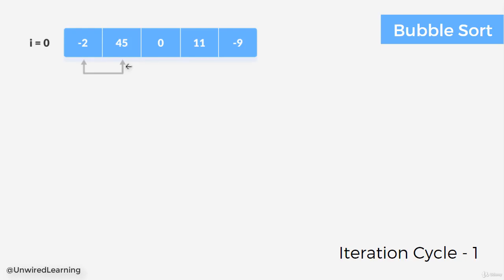Now coming back to our bubble sort. We divide everything in bubble sort according to cycle, and after every cycle we are going to collect the highest value at the end of the list. So that means after first cycle we will have 45, then we will have 11, then 0, then minus 2, and then minus 9. So let's begin our task.